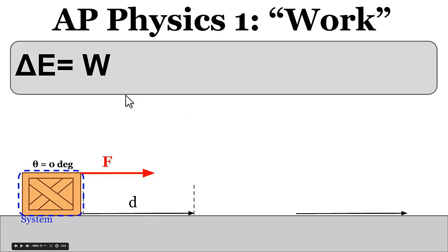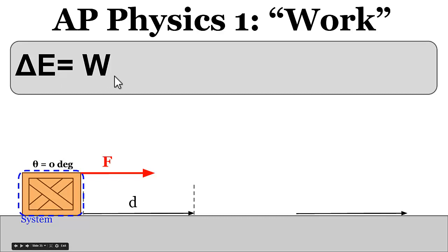If there's a change in the total energy within a system — if the change in energy is not zero — that means energy was either transferred into the system or transferred out of the system. We call that transfer of energy, by applying an external force over some displacement, work.